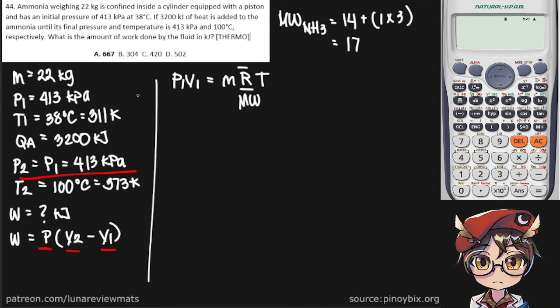OK, so we have our P1. We're trying to look for V1. We know our mass, our gas constant, our molecular weight, and of course, our temperature.